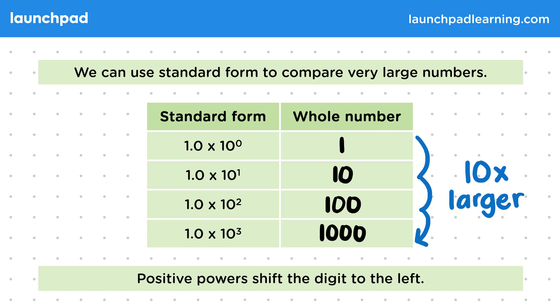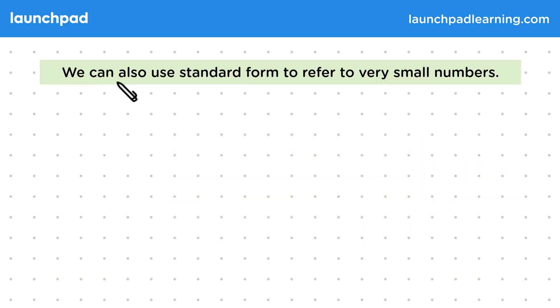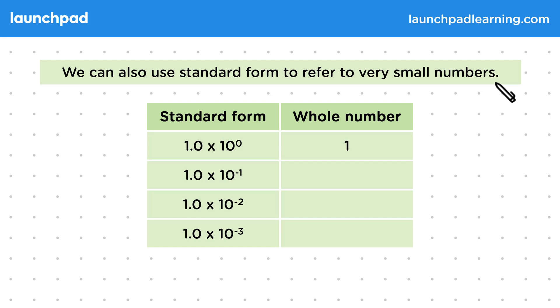What does it look like when we put small numbers in standard form? We can also use standard form to refer to very small numbers. This table shows examples of very small numbers in standard form. Remember, if the power of 10 is negative, the number is small. Negative powers shift the digit to the right.